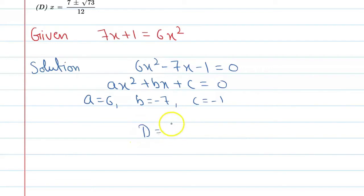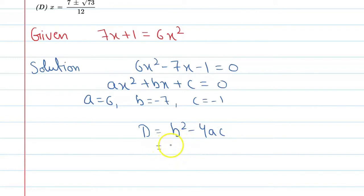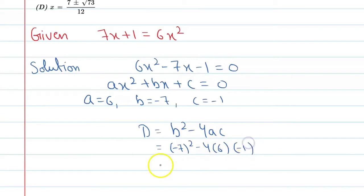Here we find the discriminant, which is b squared minus 4ac. The value of b squared: b is minus 7, so minus 7 raised to power 2, minus 4, a is 6, c is minus 1. This will become 49 minus minus 24, which is plus 24. So discriminant equals 73.